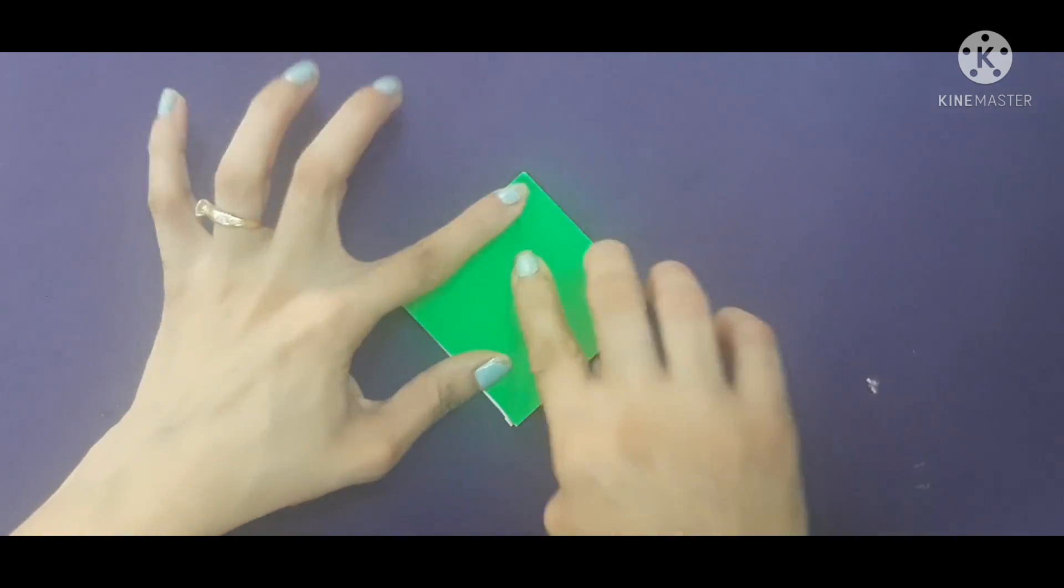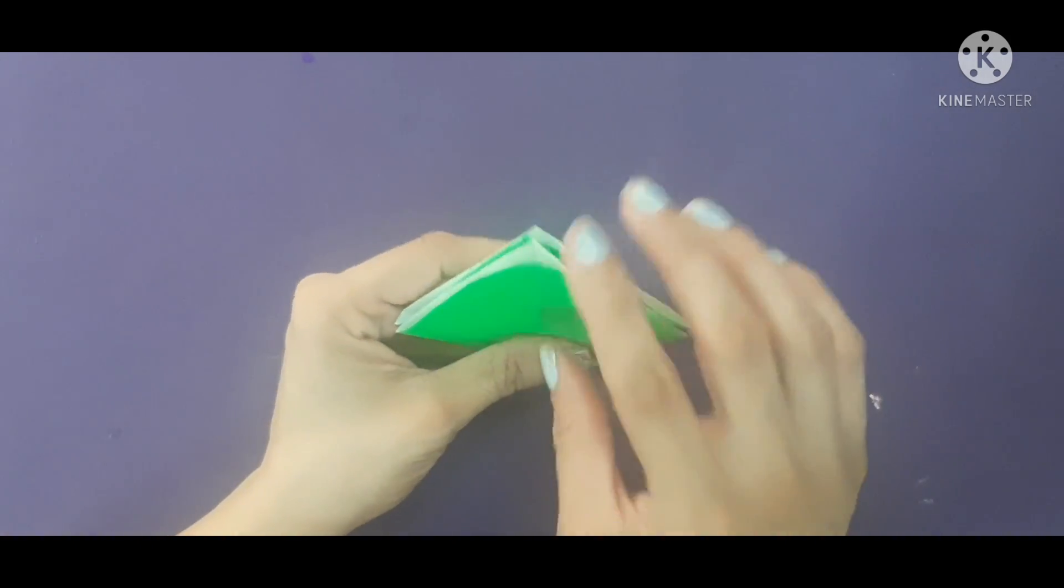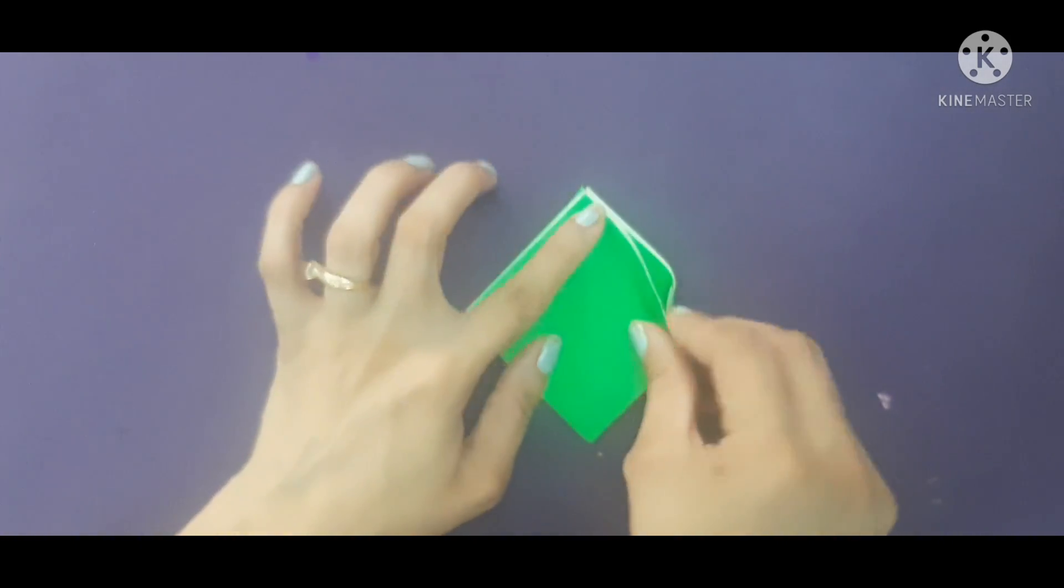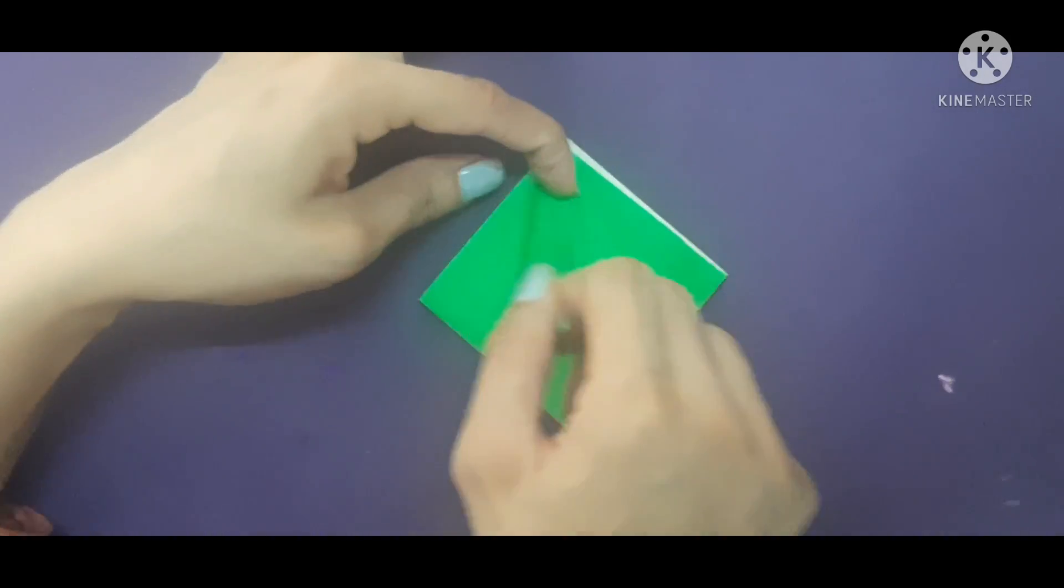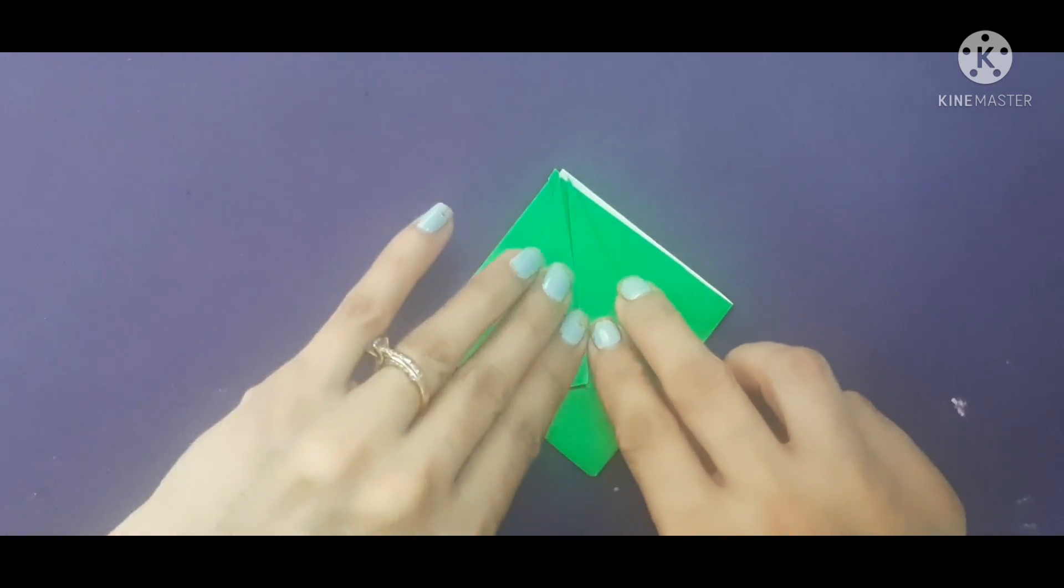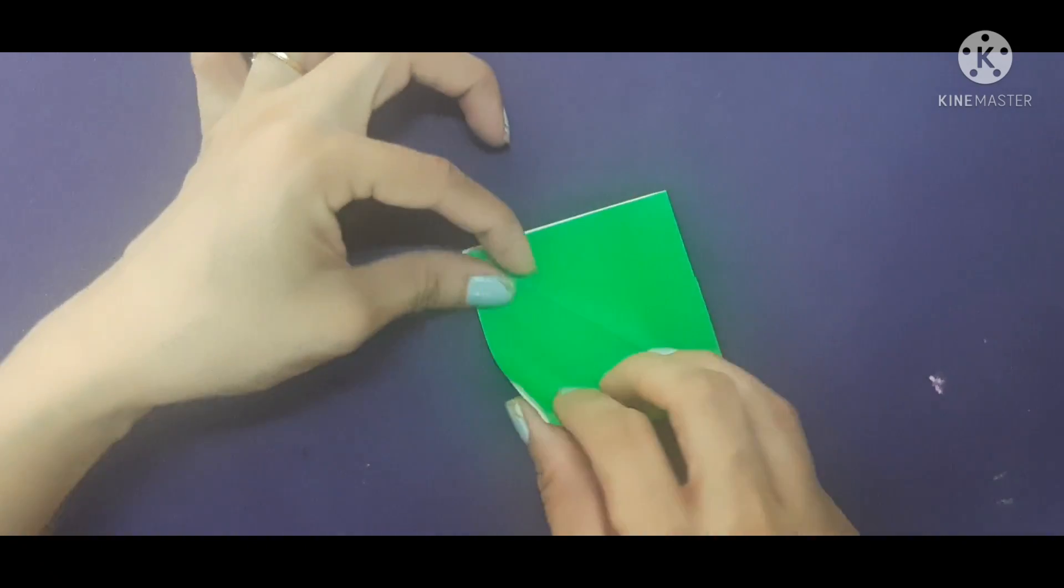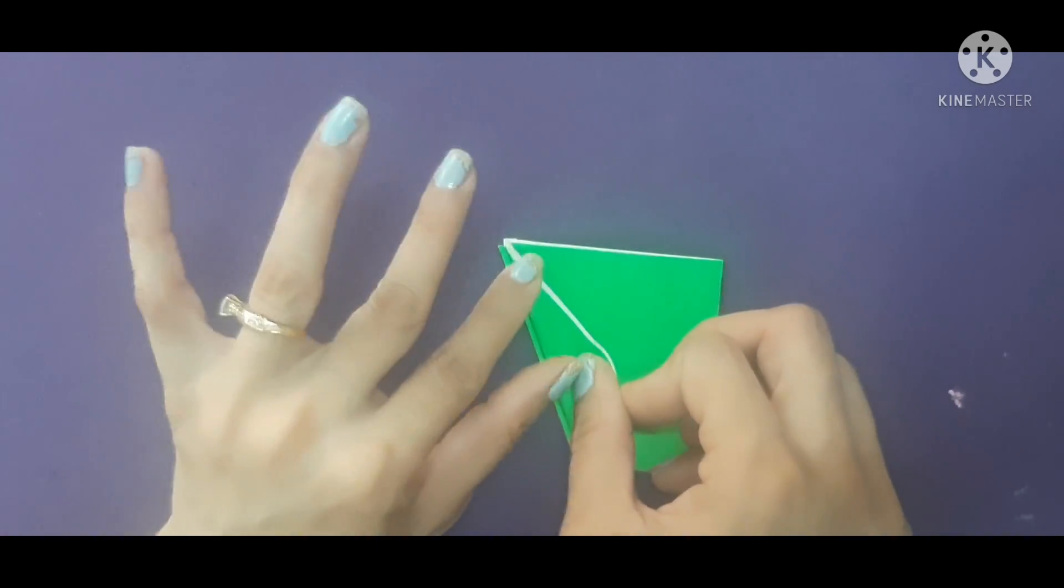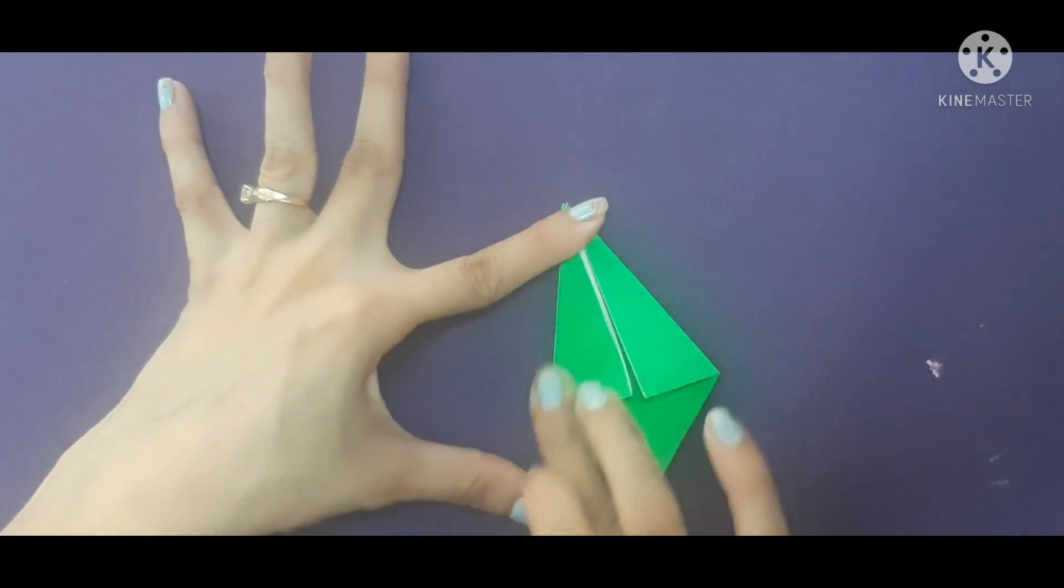Like this. Now see the open side. You have to fold it from here. Like this. Make this point here. Again, you will fold it from here. Now see the side also, and you will get the line.